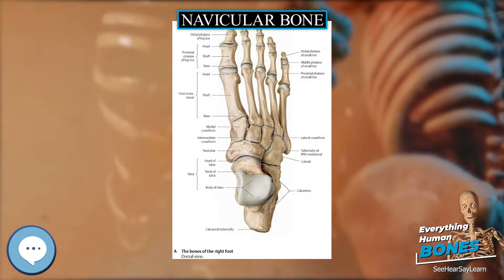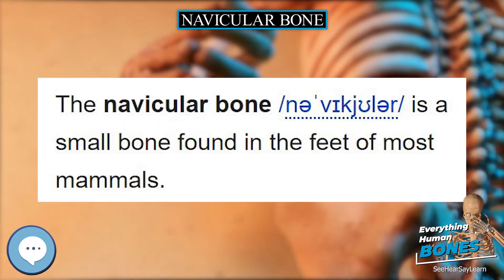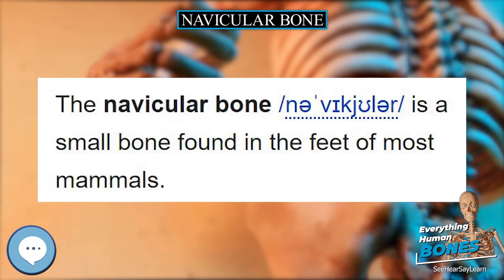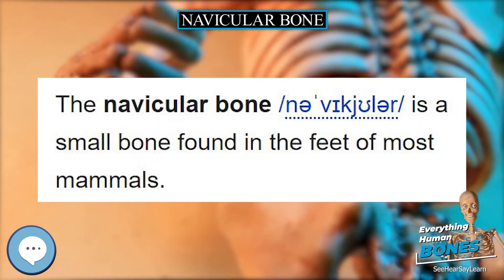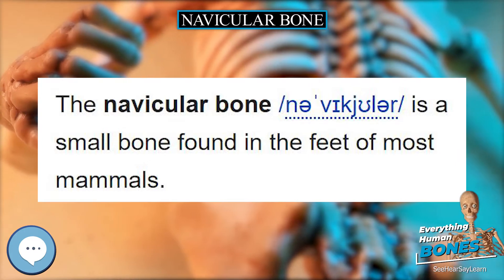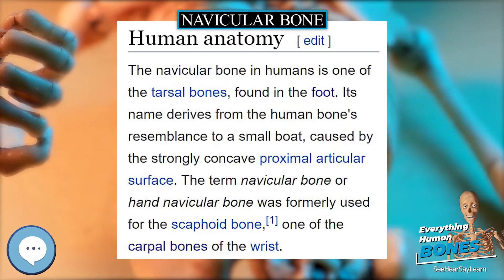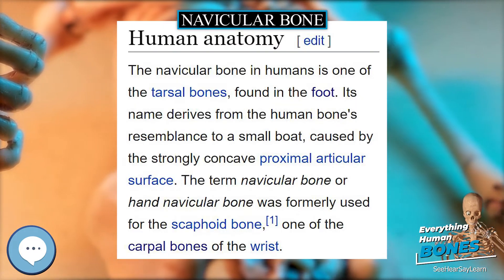The navicular bone in humans is located on the medial side of the foot, and articulates proximally with the talus, distally with the three cuneiform bones, and laterally with the cuboid.